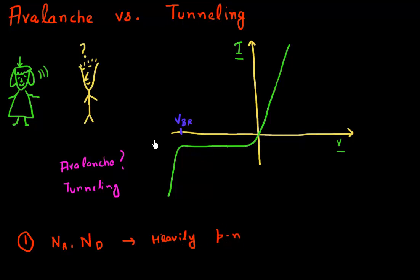She says, Anish, I agree that this is probably a good thing to check. I didn't make these devices myself — these were grown by epitaxy or these junctions were formed by implantation. So let me go back and check with the vendor whether they were heavily doped or what are the doping concentrations in my PN region. And she goes away and tries to figure this out.